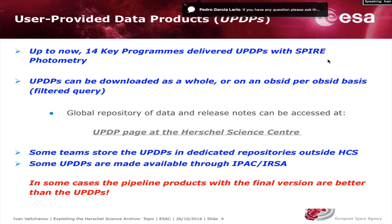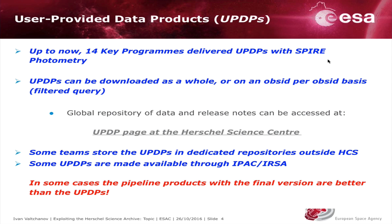In addition to the standard products generated by the pipelines, if you participated in the session yesterday, we have the so-called user-provided data products, UPDPs. These are products delivered by Herschel Key programs, and up to now we have about 14 such key programs delivering their Spire photometry maps.